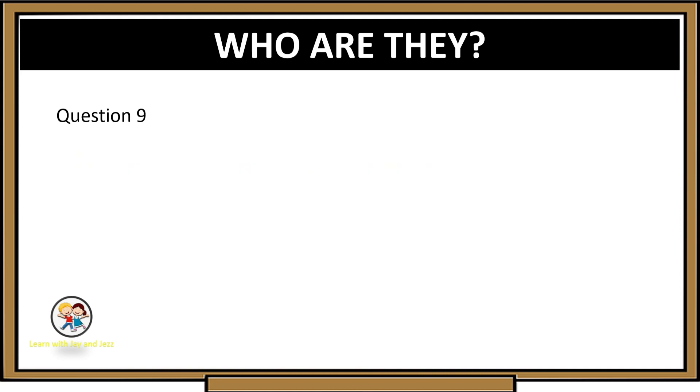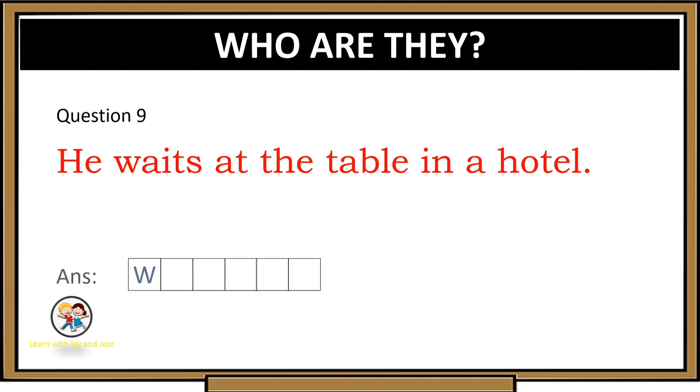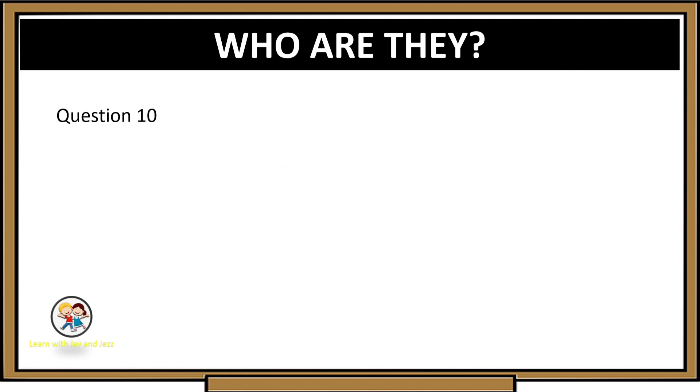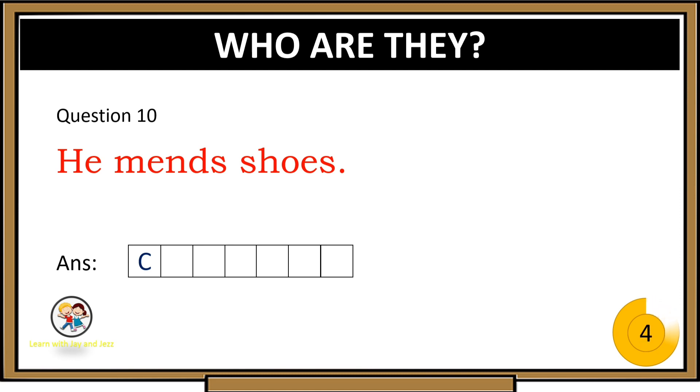Question 9: He waits at the table in a hotel. Waiter. Question 10: He makes shoes. Cobbler.